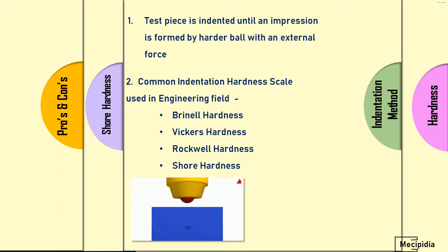Common indentation hardness scales are Brinell hardness, Vickers hardness, Rockwell hardness, and Shore hardness. Today in this video, we will only see about Shore hardness.